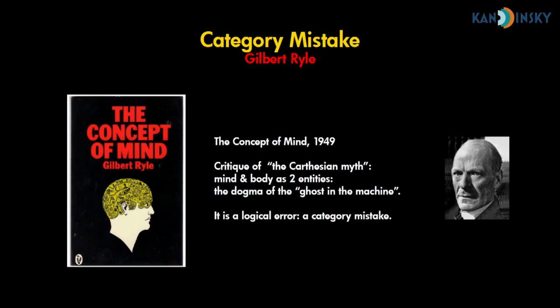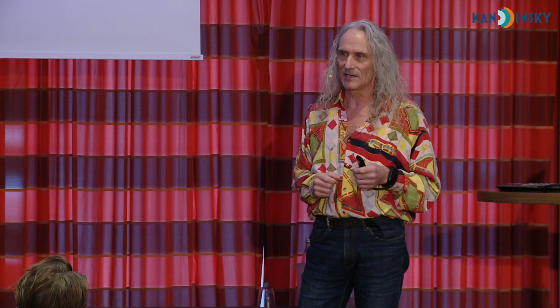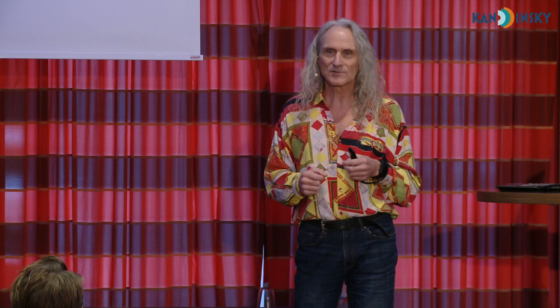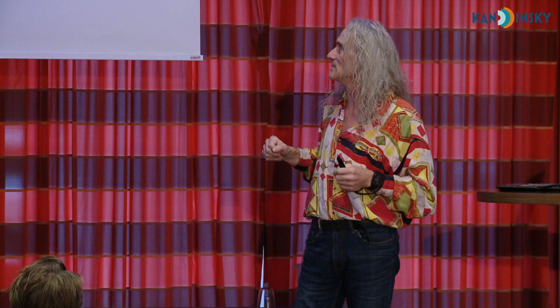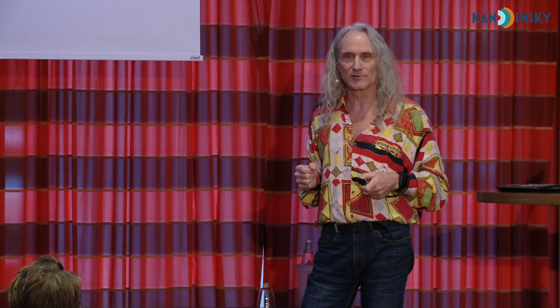One of the best books I have ever read — and there is a free PDF on the internet, legally, it's from 1949 — is Gilbert Ryle's The Concept of Mind. It's a big rant against Cartesian dualism. Descartes saw body and mind as two totally different things, and Ryle went against that, saying that the myth of the 'ghost in the machine' is a logical error — a category mistake. In the book he gives a lot of examples of what a category mistake is.